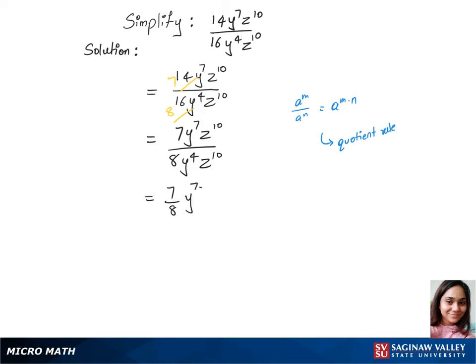We have the base y to the power 7 minus 4 times z to the power 10 minus 10. This gives us 7 over 8 times y power 3. z to the power 10 minus 10 will be 0, so we can ignore z. So this is our answer.